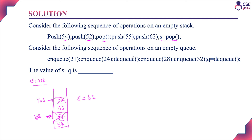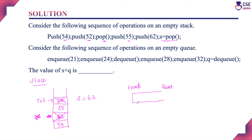Now we perform the queue operations. A queue is first in first out — the element entered first is removed first. Insertion happens at the rear end and deletion at the front end. The first operation is NQ 21, so element 21 is inserted into the queue.